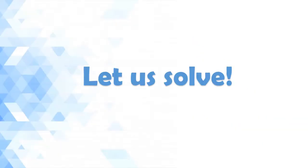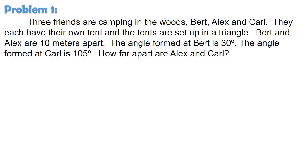And now, let's start. Problem number one. Three friends are camping in the woods, Bert, Alex and Carl. They each have their own tent and the tents are set up in a triangle. Bert and Alex are 10 meters apart. The angle formed at Bert is 30 degrees. The angle formed at Carl is 105 degrees. How far apart are Alex and Carl?